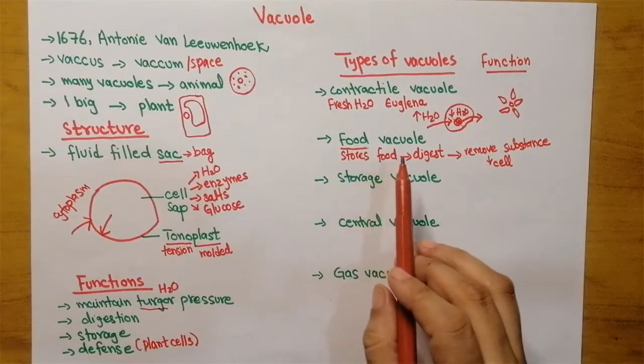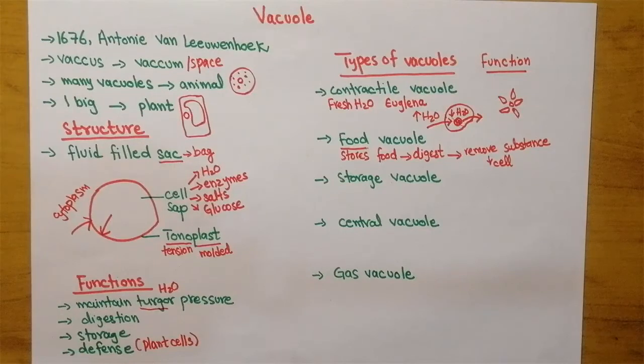Any food that gains entry inside the cell is taken up by the food vacuole, then it is digested, and then smaller substances are released into the cytoplasm so the cell can use it for further processing.